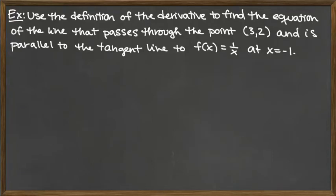In this example, we are looking for an equation of a line that passes through a given point (3, 2), and that line needs to be parallel to the tangent line to the function f(x) = 1/x at x = -1.